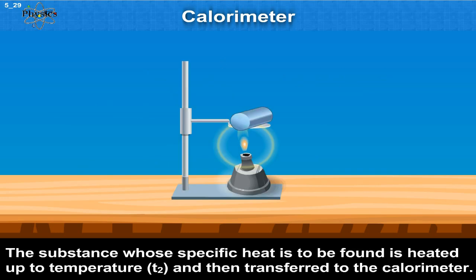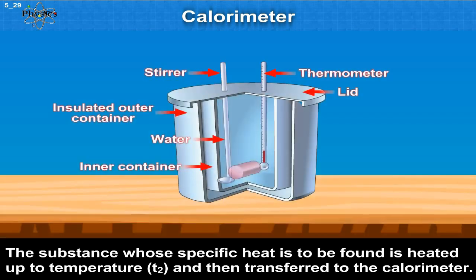The substance whose specific heat is to be found is heated up to temperature T2 and then transferred to the calorimeter.